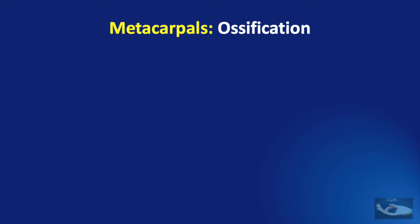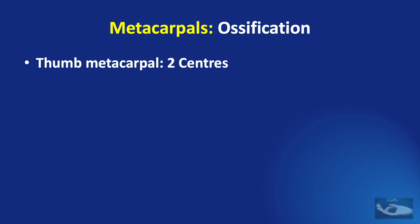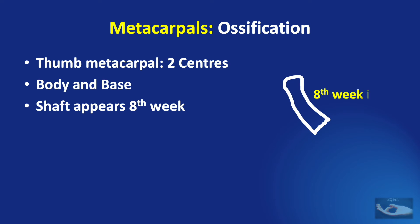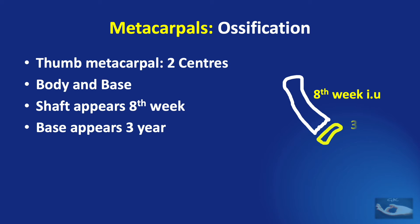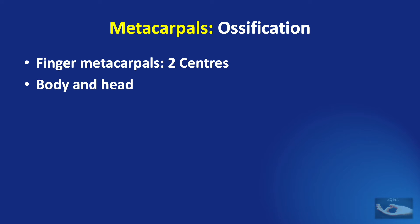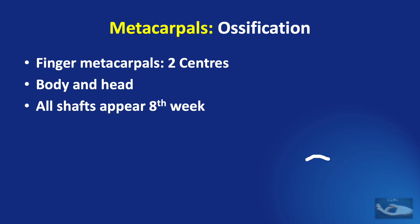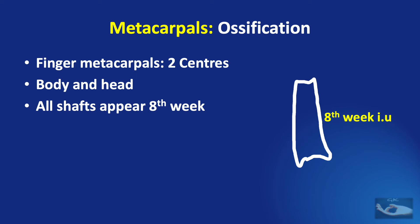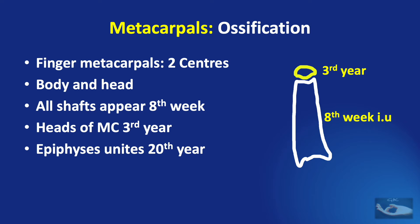Ossification of the metacarpals follows a particular pattern. The thumb metacarpal ossifies from two centers — one for the body and one for the base. The body center appears by the eighth week of intrauterine life and the base at three years of age, uniting at 18 to 20 years. The finger metacarpals also ossify from two centers — the body and the head — with the shaft centers appearing by the eighth week of intrauterine life, the head centers at three years, and union by 18 to 20 years.